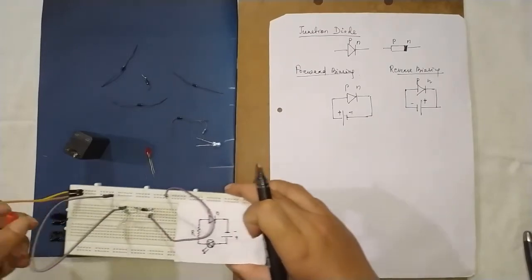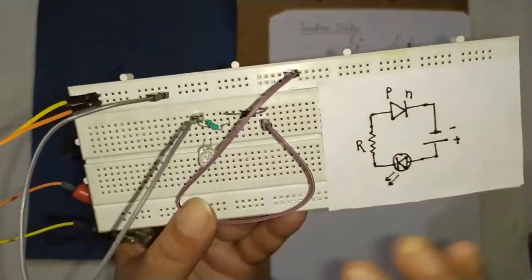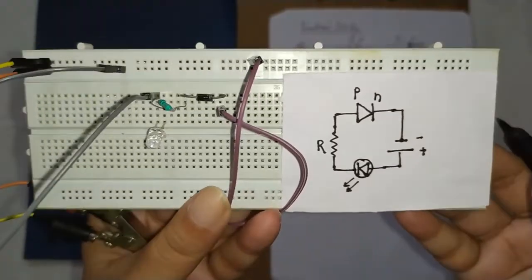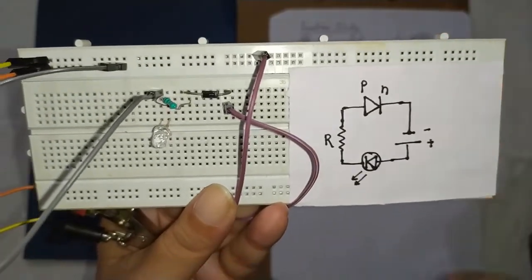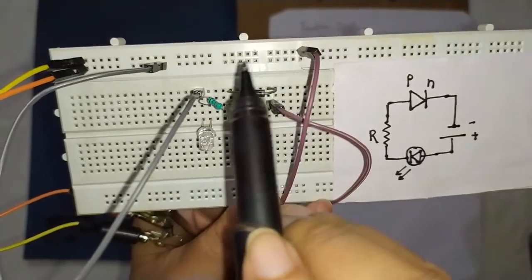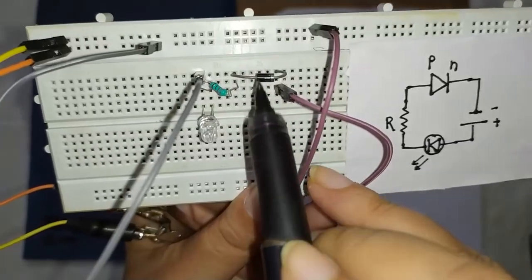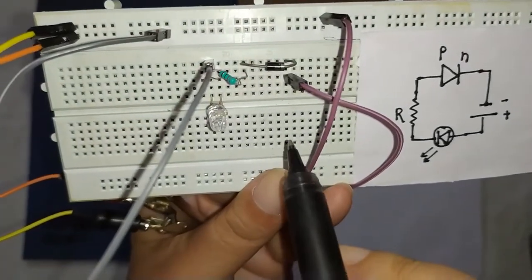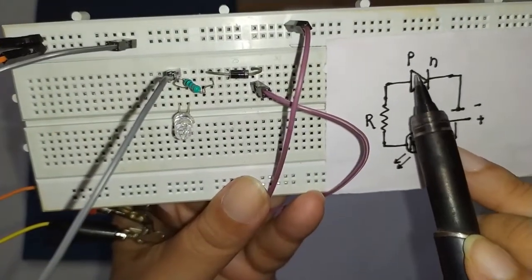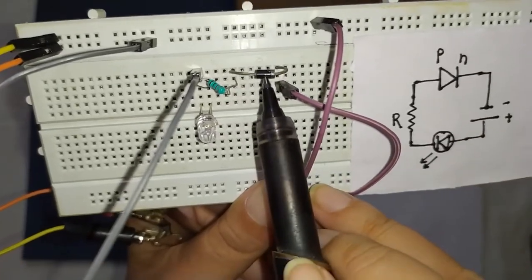This is the arrangement I have done. This is the breadboard — the lines above are connected in series and the lower ones are connected in parallel. This is your diode — this is the P side and this is the N side of the diode.